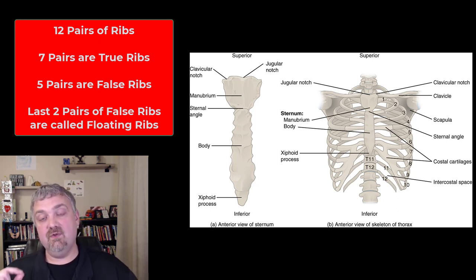The last five pairs of ribs are called false ribs because they don't attach directly to the sternum. Ribs eight, nine, and ten attach to the costal cartilage of rib seven. Ribs 11 and 12 don't attach at all - those are called your floating ribs.